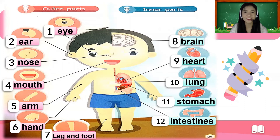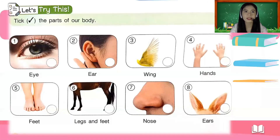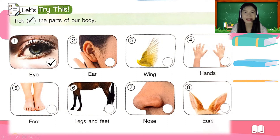Now it's time for our activity. Open your science book to page 22. You can see an activity that says 'Take the parts of our body.' For example, number one is an eye — is it a part of the body? If it is, you are going to tick the circle. Number two is ear — is it part of the body? Yes or no? Tick or not tick.